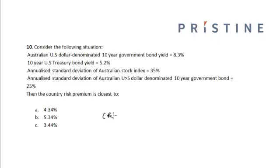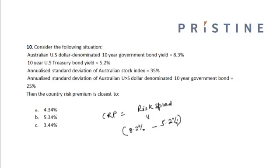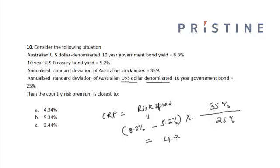The country risk premium is specified as the risk spread, which is equal to the Australian US-denominated 10-year government bond yield (8.3%) minus the 10-year US Treasury bond yield (5.2%), multiplied by the annualized standard deviation of the Australian stock index (35%) divided by the annualized standard deviation of the Australian US-dollar denominated 10-year government bond (25%). This gives a value of approximately 4.34%.